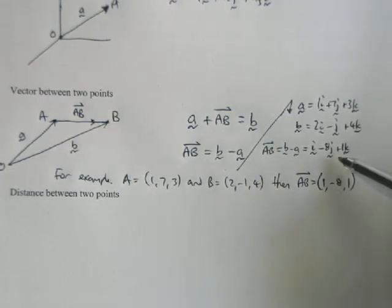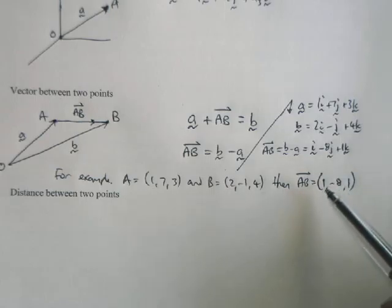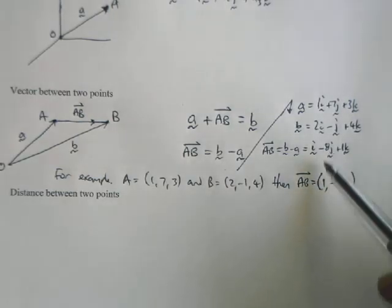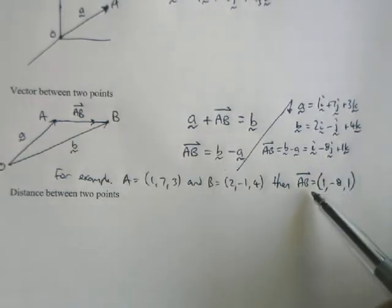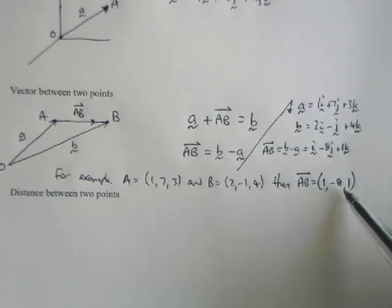But because we can't be bothered writing i's, j's, and k's every 30 seconds, we summarize it, we squish it down. It's probably a better word than that, but never mind. Abbreviate, that's the word. We abbreviate it to just another ordered triple.